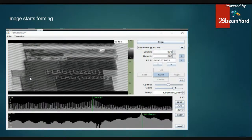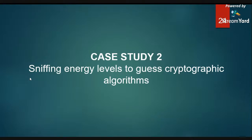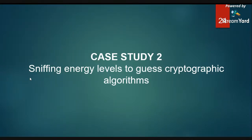The second case study is called sniffing energy levels to guess cryptographic algorithms. I talked about taking traces of power and voltage and analyzing what type of cryptographic algorithm is deployed. Before going further, I want to clarify: this is not a flaw of the algorithm — the algorithm is perfectly fine. We are able to do this and extract the entire key because there are no countermeasures like shielding in place to defend against these specific attacks.